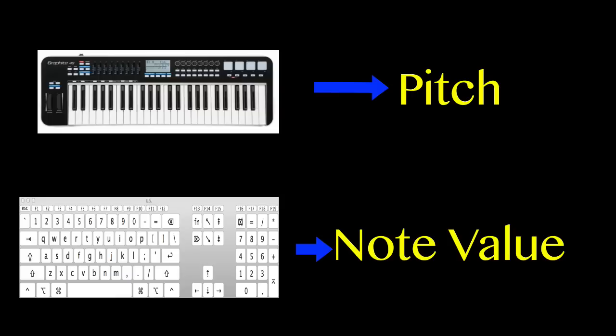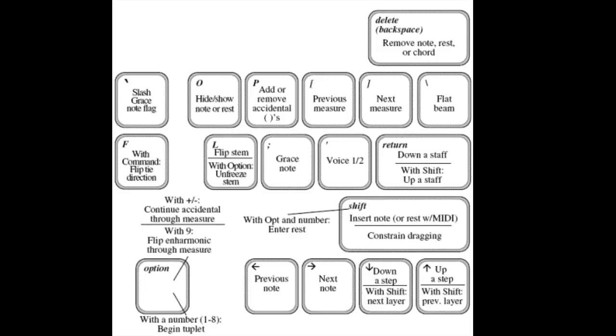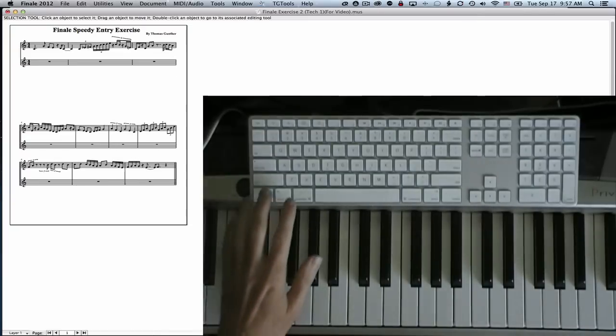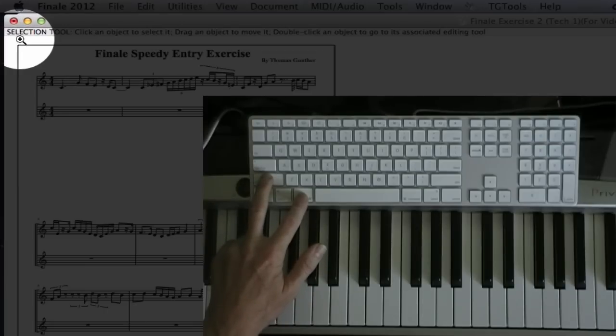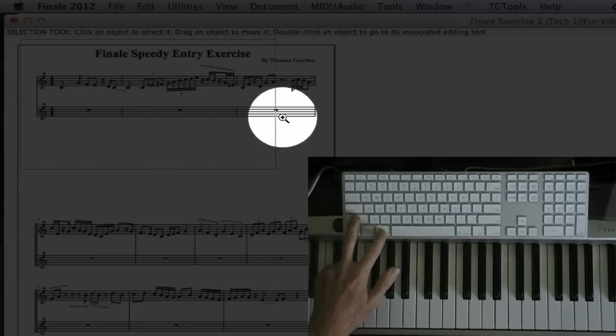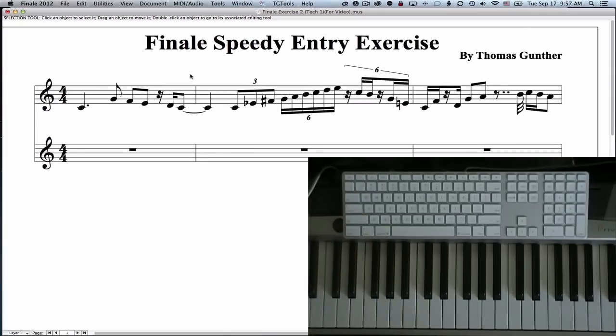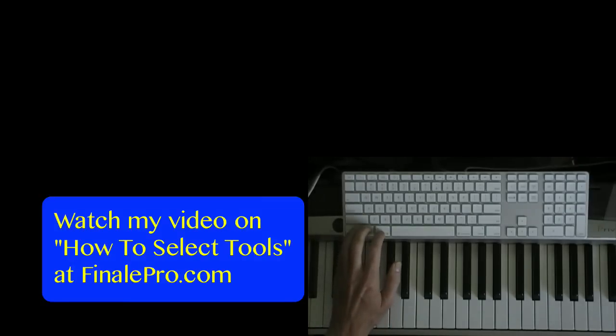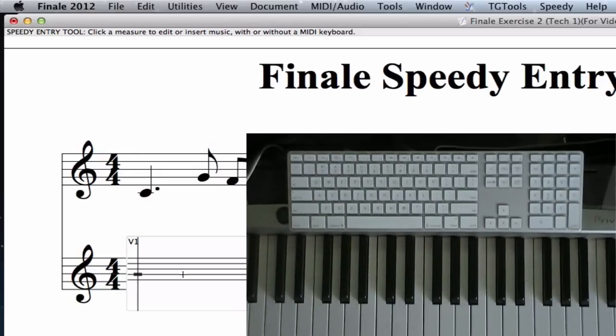Here are the keyboard shortcuts you should know when working with the speedy entry tool. The first thing I like to do is zoom in: shift command click and drag around the area I want to work with. Here we go. So I'm going to select the speedy entry tool and click in the bar where I want to start putting music in.